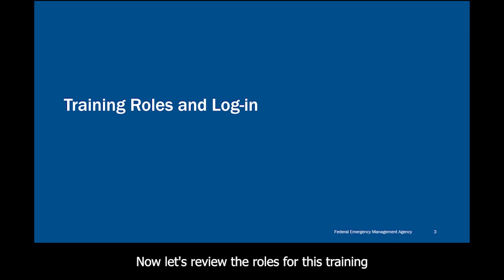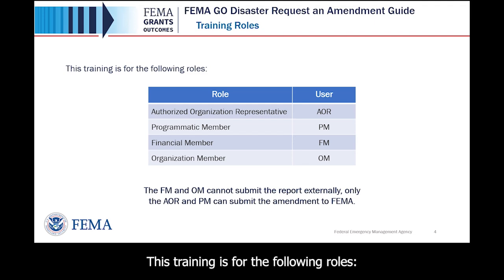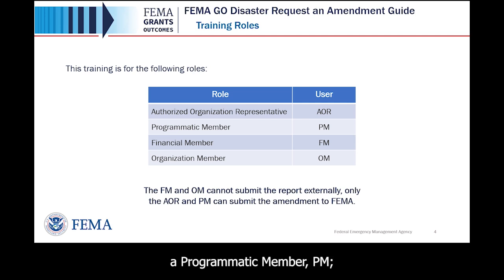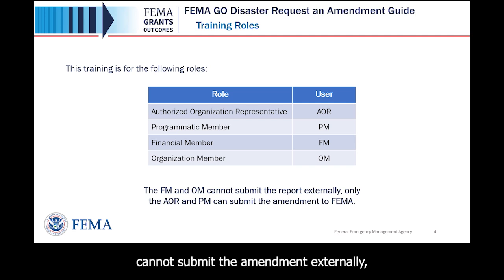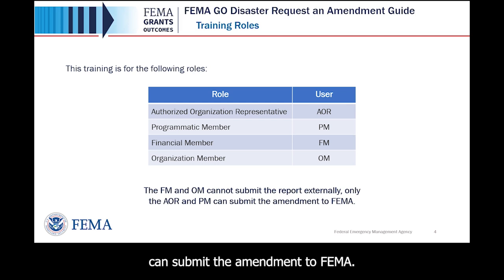Now, let's review the roles for this training and how to log in as an external user. This training is for the following roles: an Authorized Organization Representative (AOR), a Programmatic Member (PM), a Financial Member (FM), and an Organization Member (OM). It is important to note that the FM and OM cannot submit the amendment externally. Only the AOR and PM can submit the amendment to FEMA.